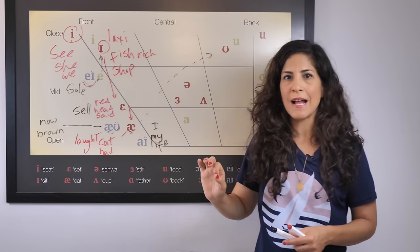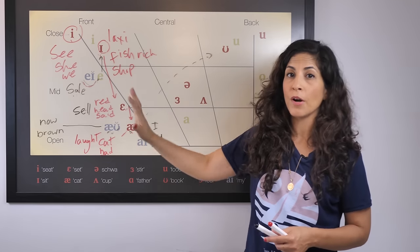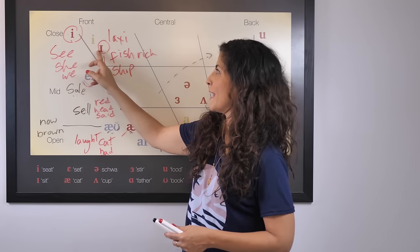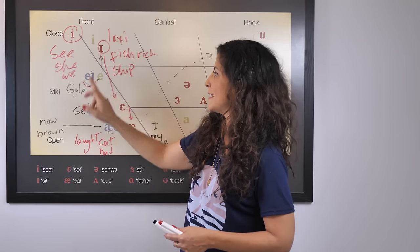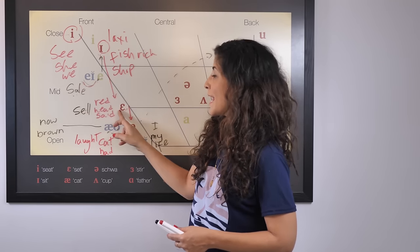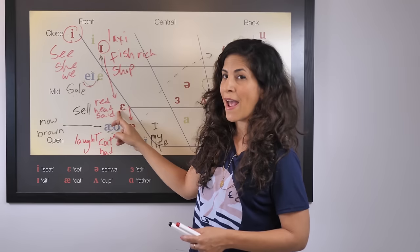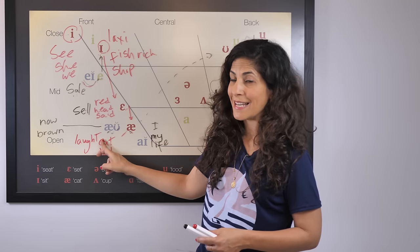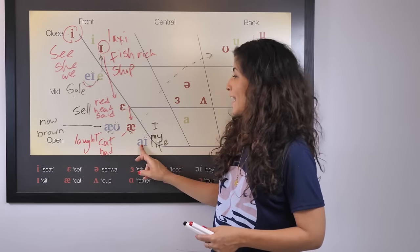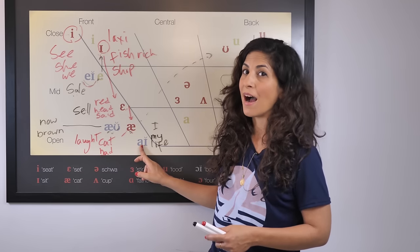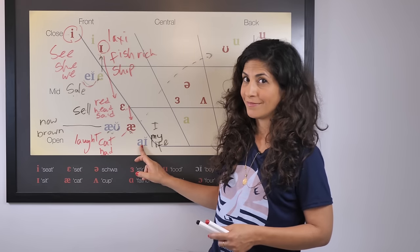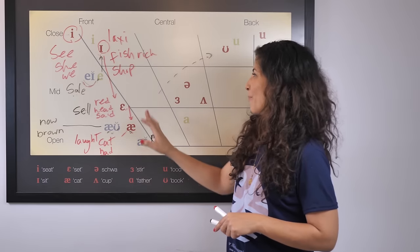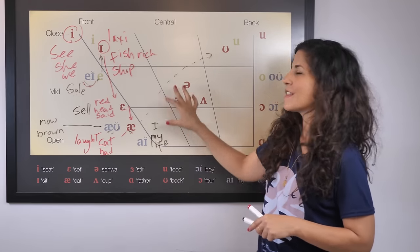Let's look at all the vowel sounds in the front part of the mouth. We have the E as in 'see,' the I as in 'sit,' the A as in 'day,' the E as in 'red,' the A as in 'cat,' OW as in 'now,' and I as in 'my.' I hope you're repeating after me. Now let's move on to the center.